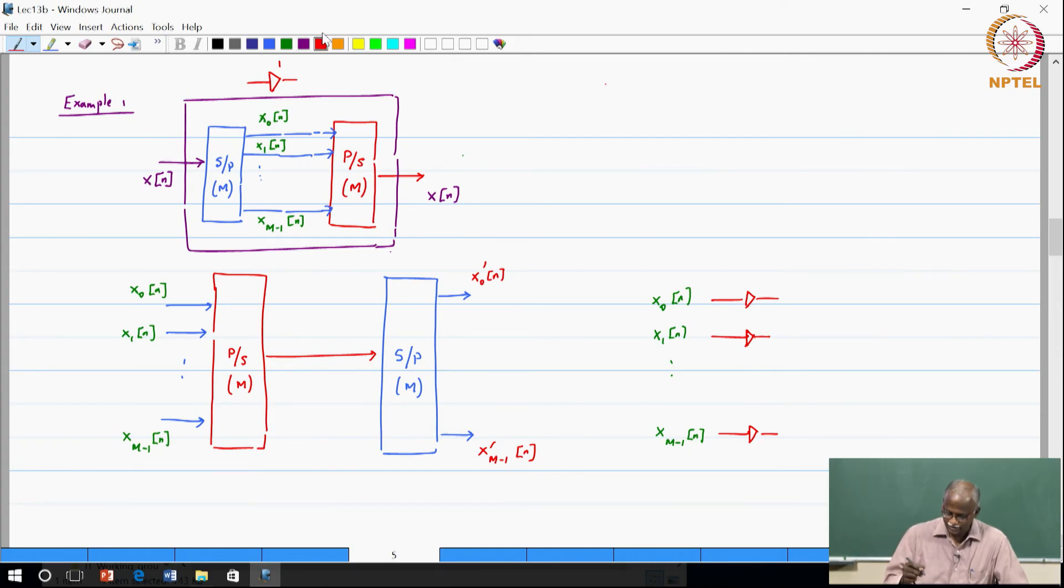This is X1 prime of N which is equal to X1 of N and XM minus 1 prime of N is equal to XM minus 1 of N.